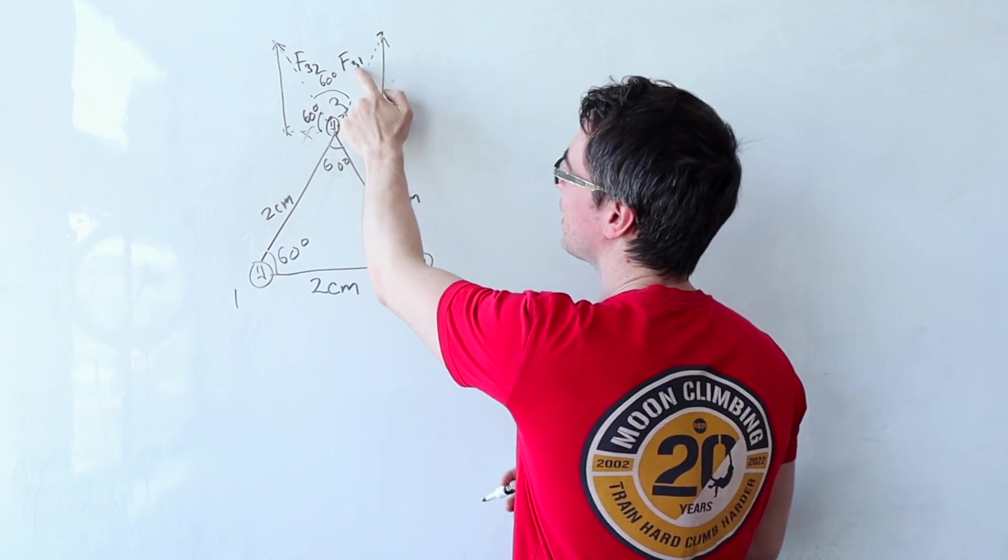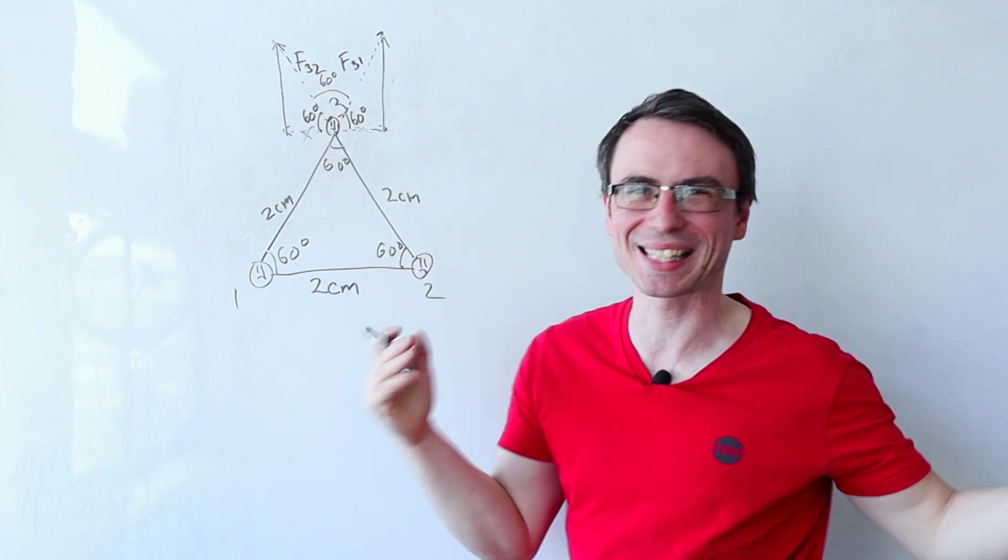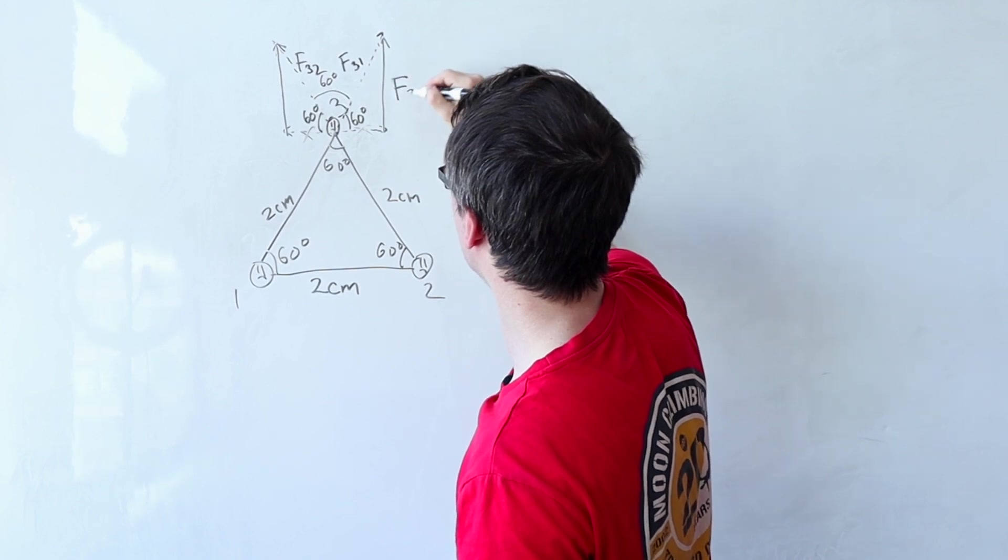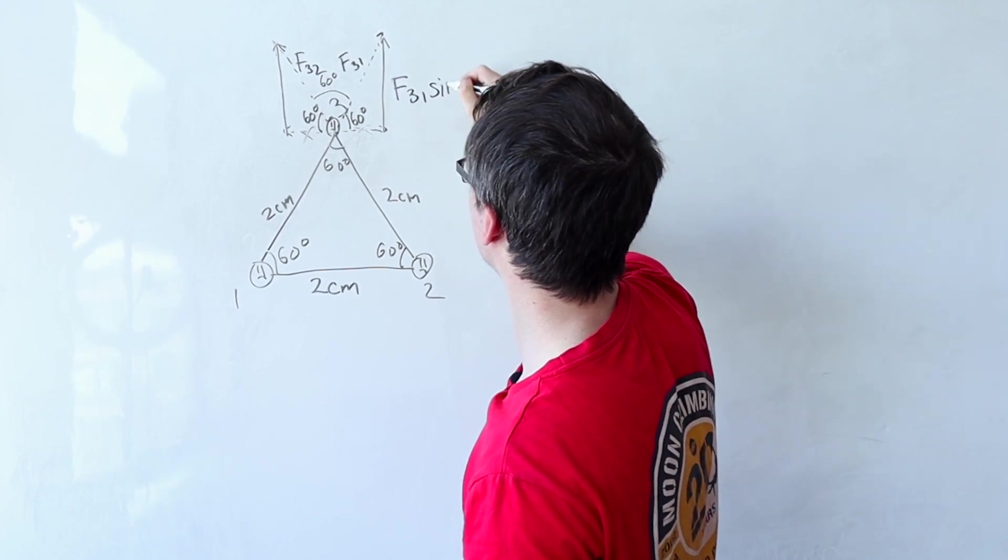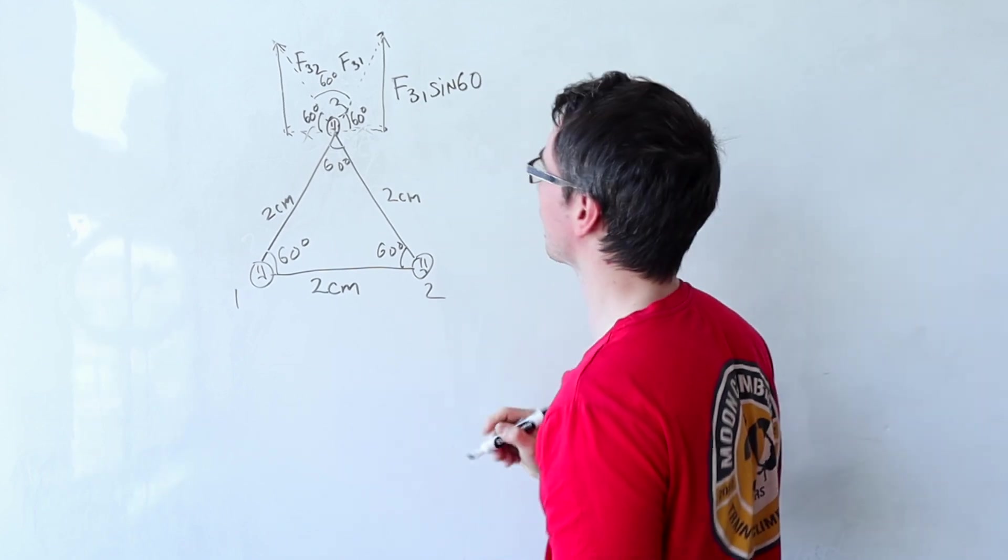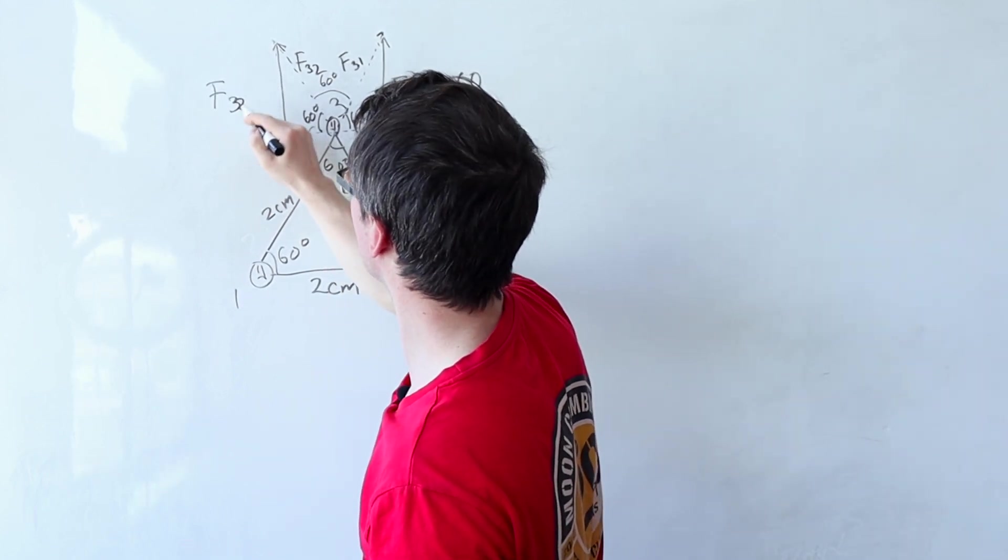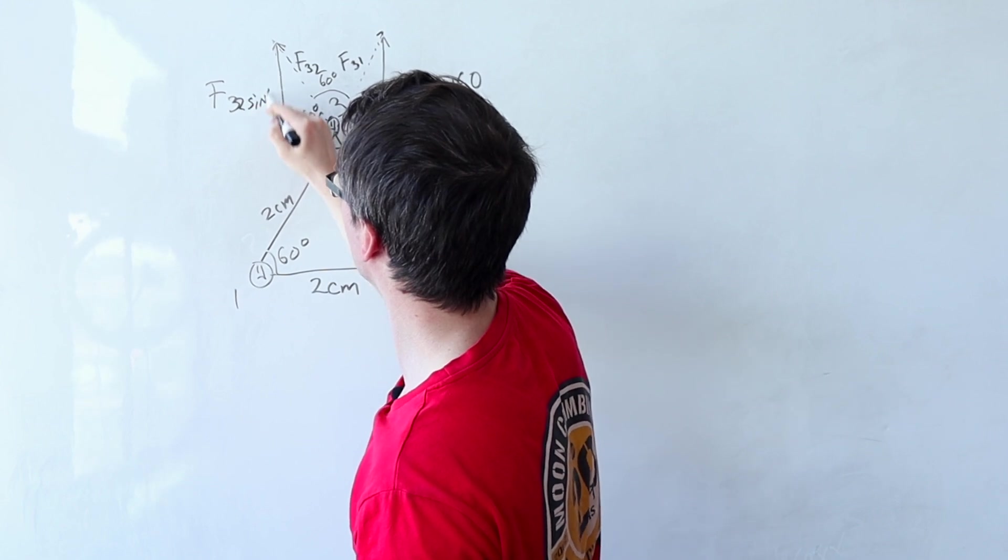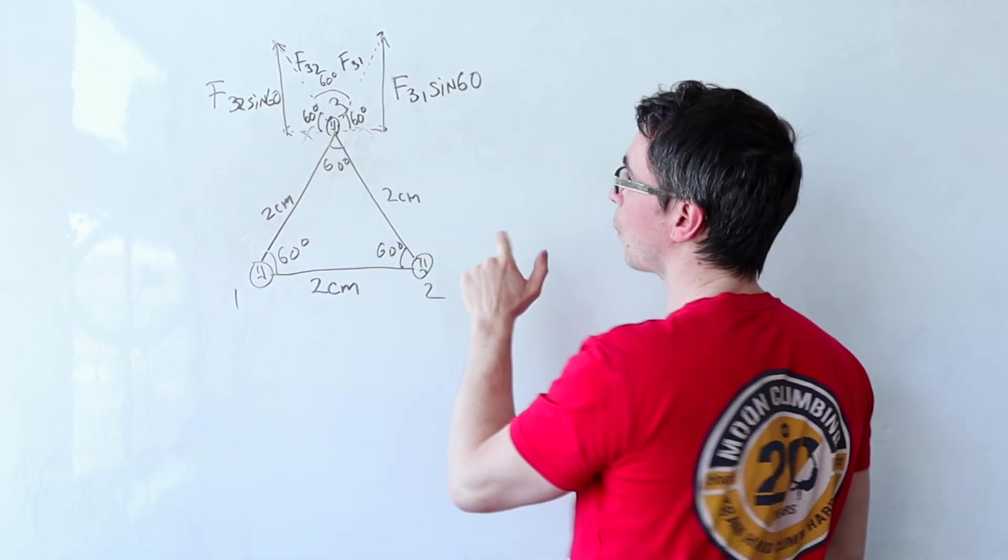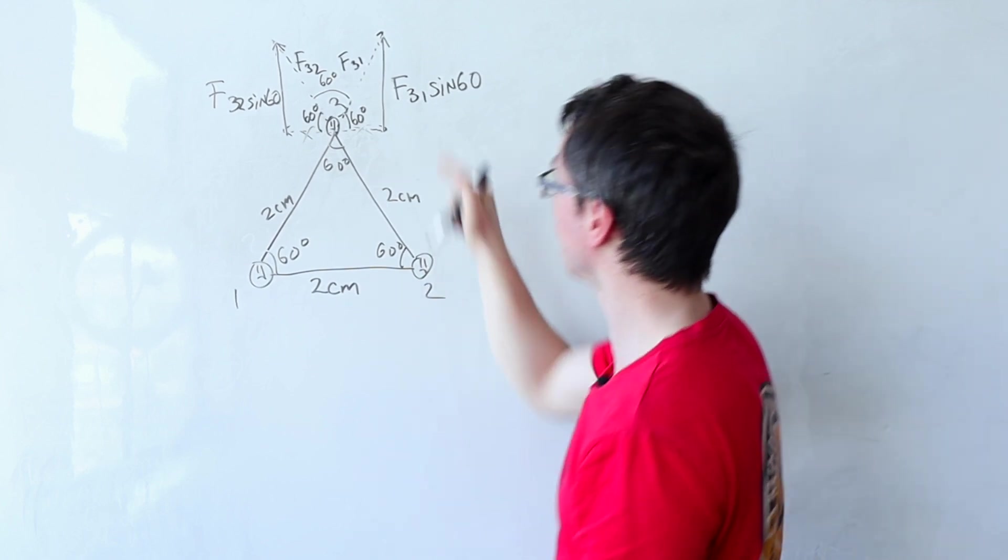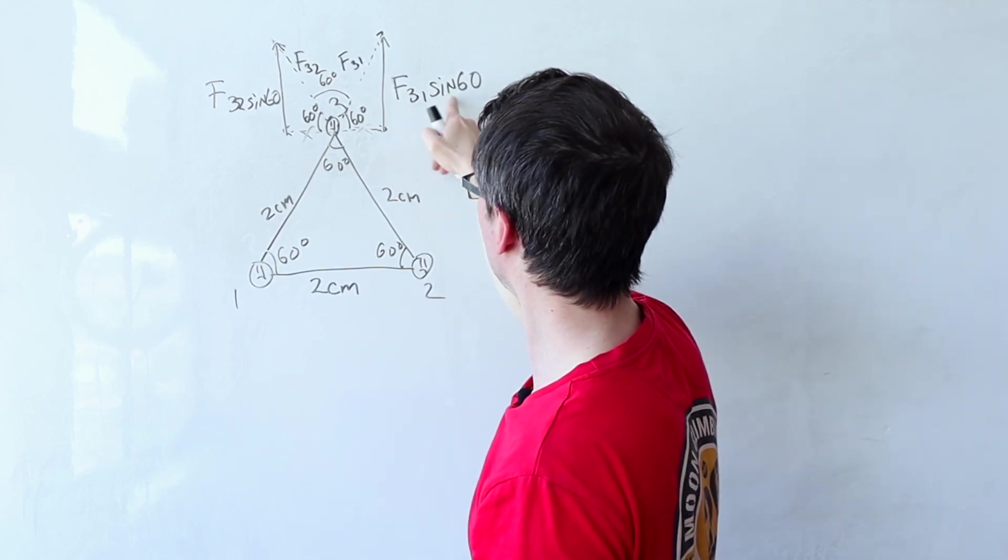The magnitude of f31 and f32 will actually be exactly the same but let's just say that the vertical component this will be f31 sine 60. This is just a subscript and this one here will be f32 sine of 60. Okay so the total force that acts on this electron will then be this one times sine of 60.